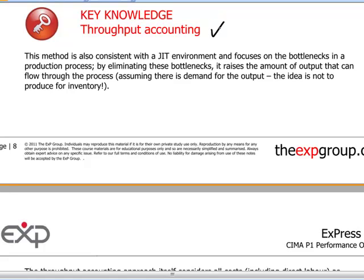Throughput accounting is a somewhat extreme cost accounting method. It focuses on direct material costs as being the only truly totally variable costs in production, and therefore treats all other costs including direct wages as being essentially fixed costs. The objective of throughput accounting is to maximize the amount of throughput that a company can achieve in a period of time.